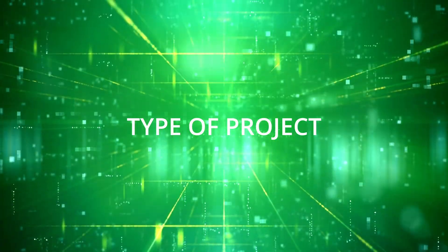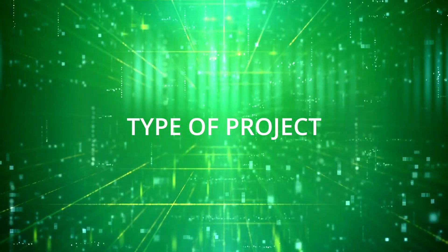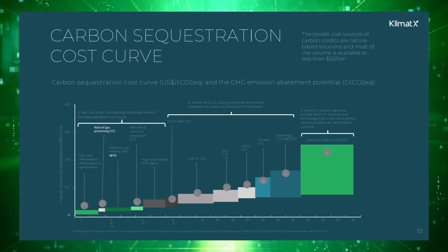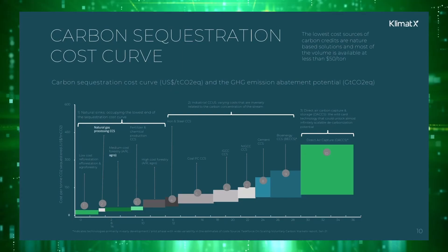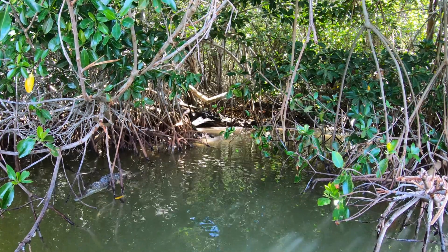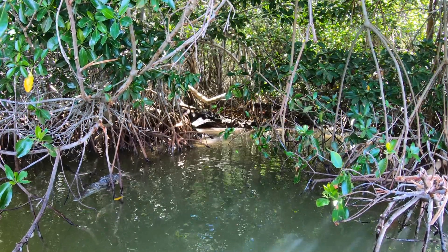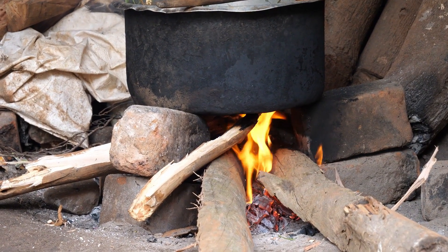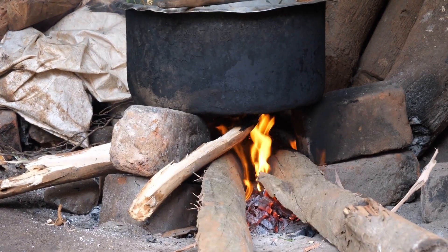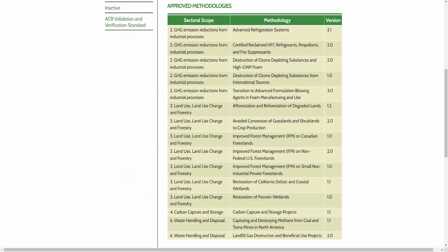The second factor is what type of project the credits come from. Is the project nature-based, like a reforestation project, or technology-based, like cook stoves or direct air capture? All these different project methodologies have different development costs and levels of demand. The list of approved methodologies from the American Carbon Registry alone is extensive, and this doesn't even account for projects on other registries.